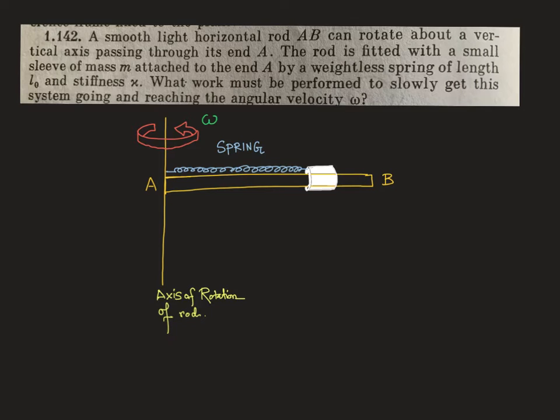In this problem, a smooth light rod AB can rotate about a vertical axis passing through A. The axis of rotation is shown here, rotating in this direction at omega.